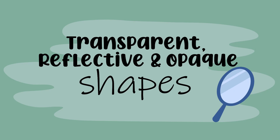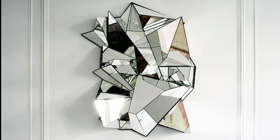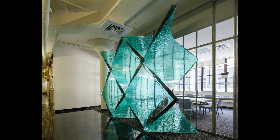There are also transparent, reflective and opaque shapes. Transparent shapes allow light to pass through them so that you are able to see what lies beyond them. Reflective shapes reflect light back to us, creating a mirror image. Opaque shapes absorb light but also reflect some color back.